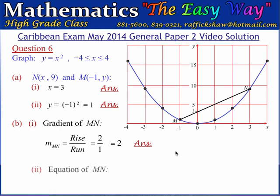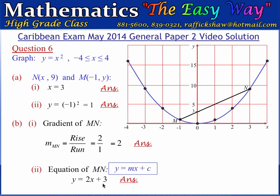Part 2 of section B wants us to write the equation of the line MN. Since we know the line MN crosses the y-axis at 3 and the gradient is 2, we use the gradient-intercept form y equals mx plus c. The equation of the line MN is y equals 2x plus 3.